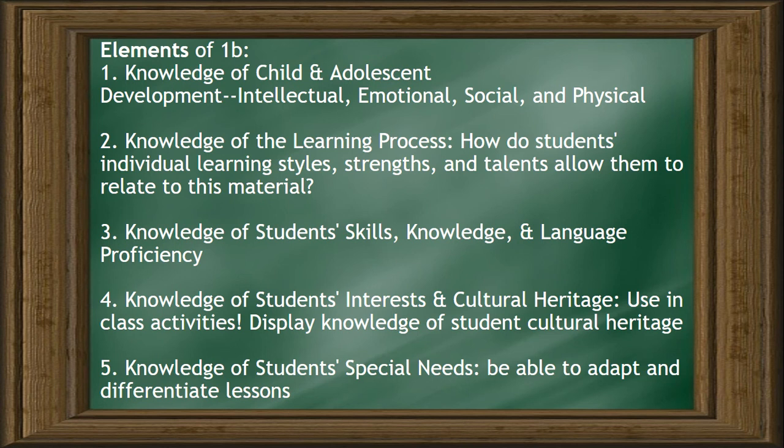Elements of 1B: Knowledge of child and adolescent development — intellectual, emotional, social, and physical. Knowledge of the learning process — how do students' individual learning styles, strengths, and talents allow them to relate to this material? Knowledge of students' skills, knowledge, and language proficiency.